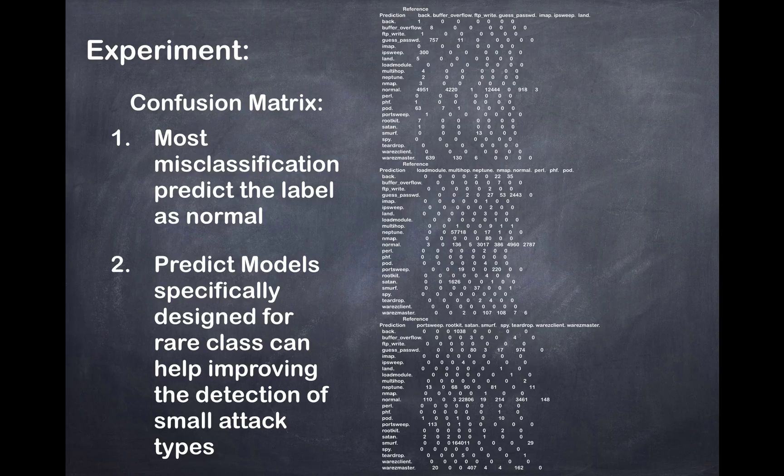This is the confusion matrix of the near-zero variance plus Naive Bayes method. We can easily find that most misclassifications predict the label as normal. It is because there are many rare classes which have just a few instances of that class appearing in these categories.